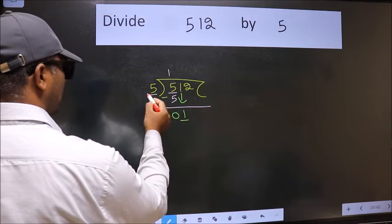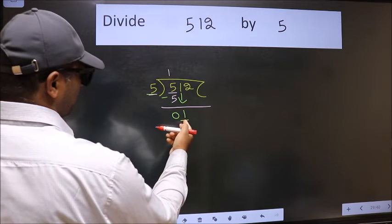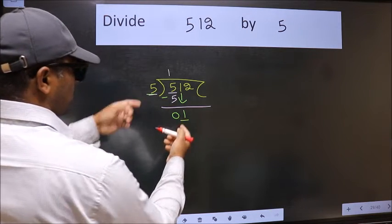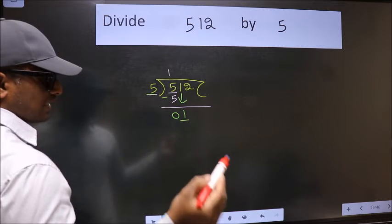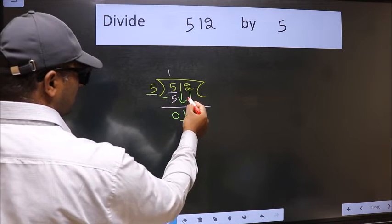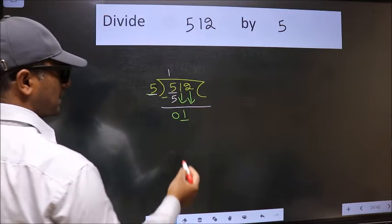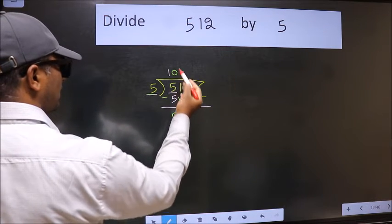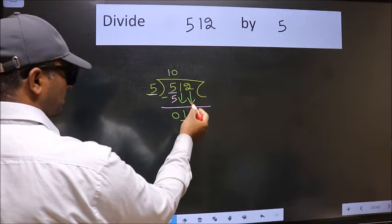Now here we have 1, and here 5. 1 is smaller than 5, so we should bring down the second number. And the rule to bring down the second number is we should put 0 here, then only we can bring this number down.